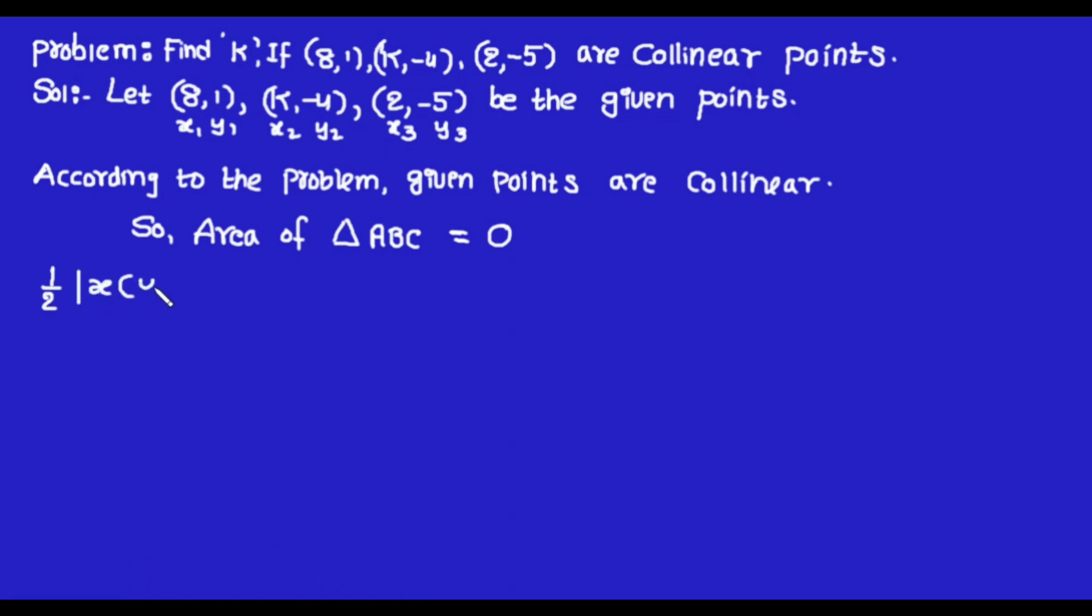Now write the formula of area of triangle ABC on the left-hand side. We will get 1/2 times the determinant of x1(y2-y3) + x2(y3-y1) + x3(y1-y2) = 0.